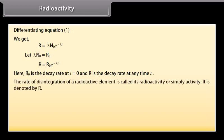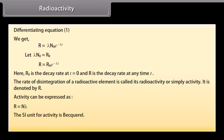The rate of disintegration of a radioactive element is called its radioactivity or simple activity. It is denoted by R. Activity can be expressed as R is equal to N lambda. The SI unit for activity is Becquerel. 1 Becquerel is equal to 1 Bq is equal to 1 decay per second.